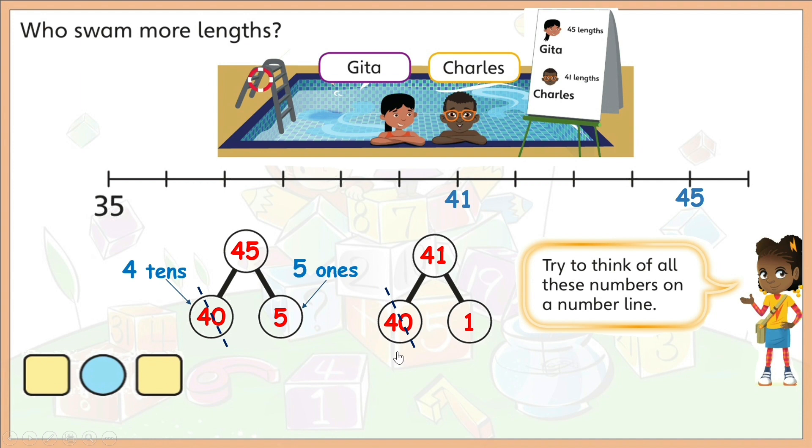You may want children to cross out the number of tens since they are the same. This way, you won't get confused when you compare the number of ones. Now, since we know that 5 is bigger or greater than 1. Therefore, 45 is greater than 41. Or, we could say that 41 is less than 45. Either of these number sentences is correct. Did you also get it right? Well done.